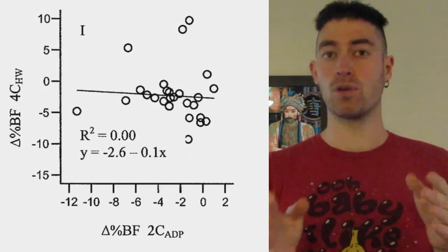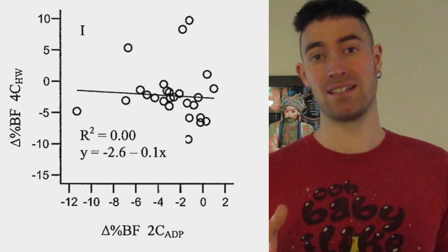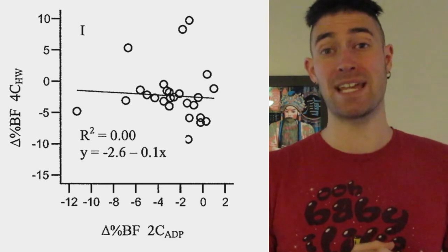The model assumes 0.9 grams per centimeter cubed for fat and 1.1 grams per centimeters cubed for bone — remember, those are not set numbers for all people. A graph comparing the two-component Bod Pod to a four-component model shows: in one example, a person gained 10% fat, but Bod Pod only measured a 1% gain in fat.